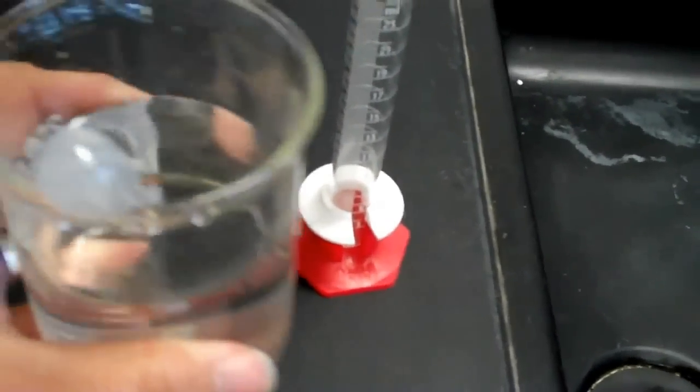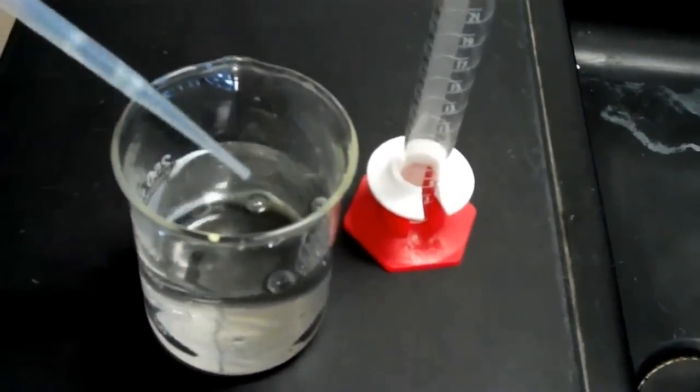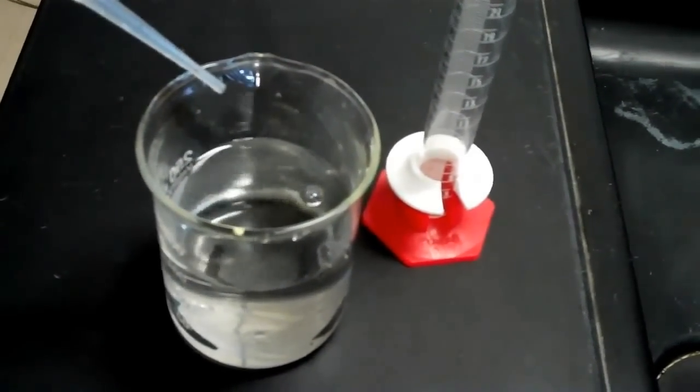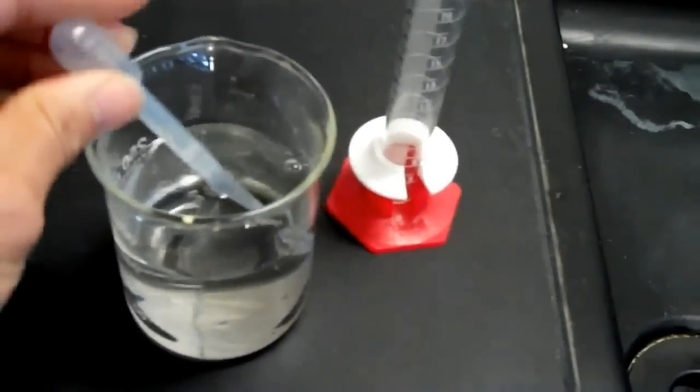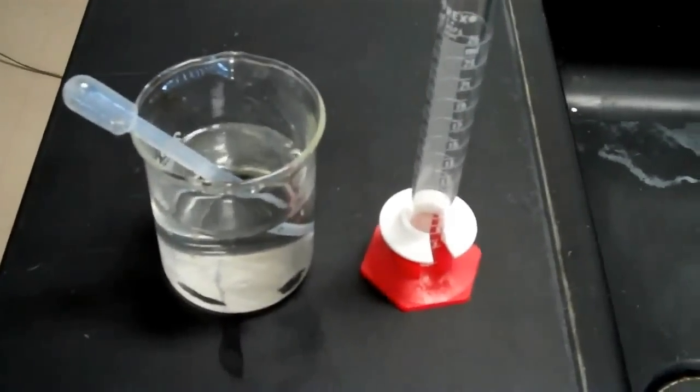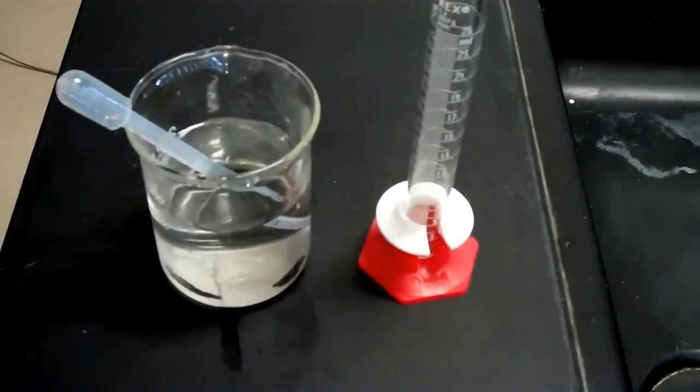Next thing I need is a beaker and a pipette. I'm going to be counting how many drops it takes to make one milliliter. But because drops are not exact amounts, I'm going to do this three times and then find an average.